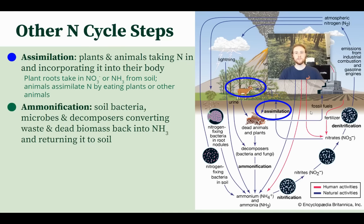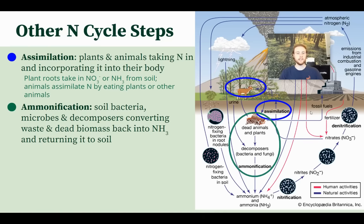Next is ammonification, which is kind of the opposite of assimilation. It is soil bacteria, microbes, and decomposers converting waste and dead biomass — dead organisms — back into ammonia that returns to the soil. Just like the carbon cycle had cycling of carbon between photosynthesis and respiration, the nitrogen cycle has something similar: organisms assimilate nitrogen, but when they die or produce waste, bacteria and decomposers break that waste down and return the nitrogen back to the soil. In the diagram, the green circle shows dead animals, dead plants, and their waste being returned to the soil as ammonia by decomposers and soil microbes.